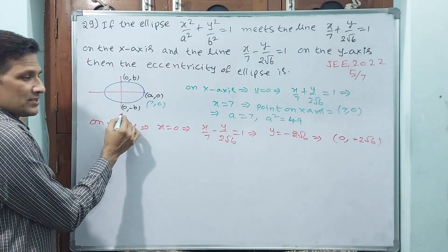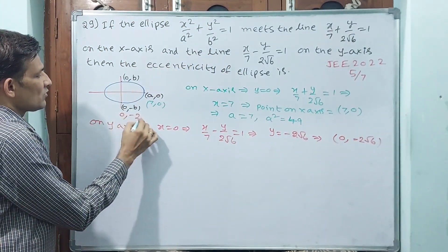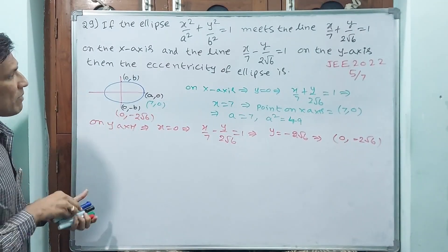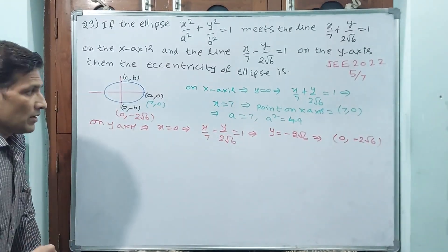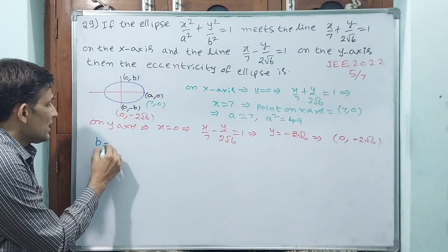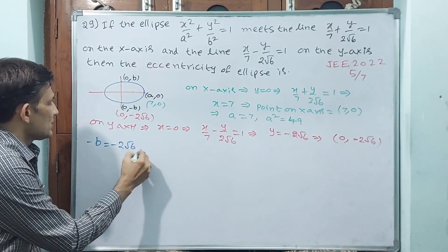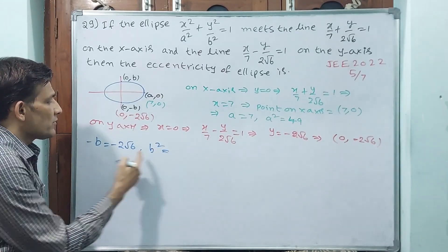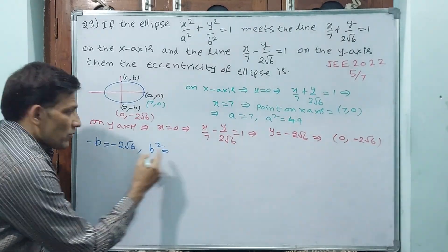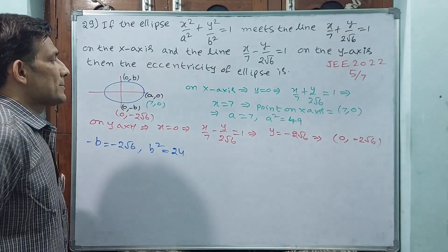You take this then, (0, -2√6). Now you go back up. b or -b = -2√6, or b² = 6 × 4 = 24.